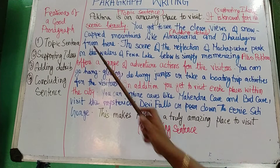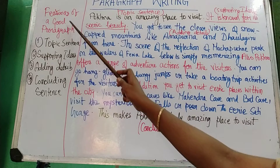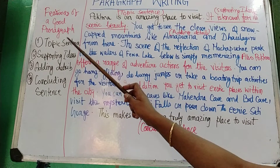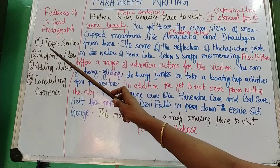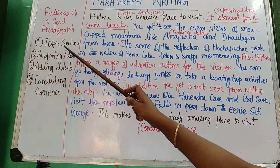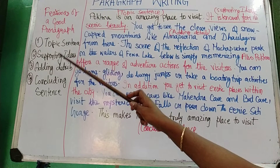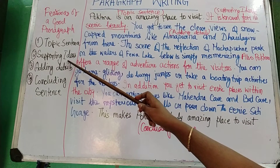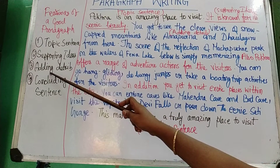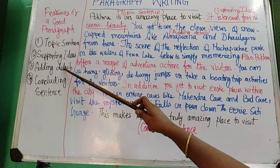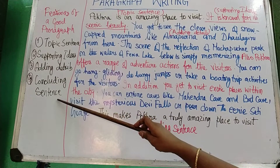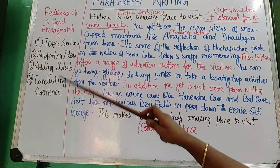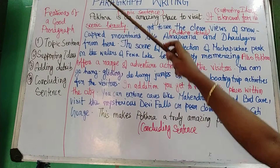If you look here, you see the features of a good paragraph. The first thing is a topic sentence, second is supporting ideas, third is adding details, and the last one is the concluding sentence.